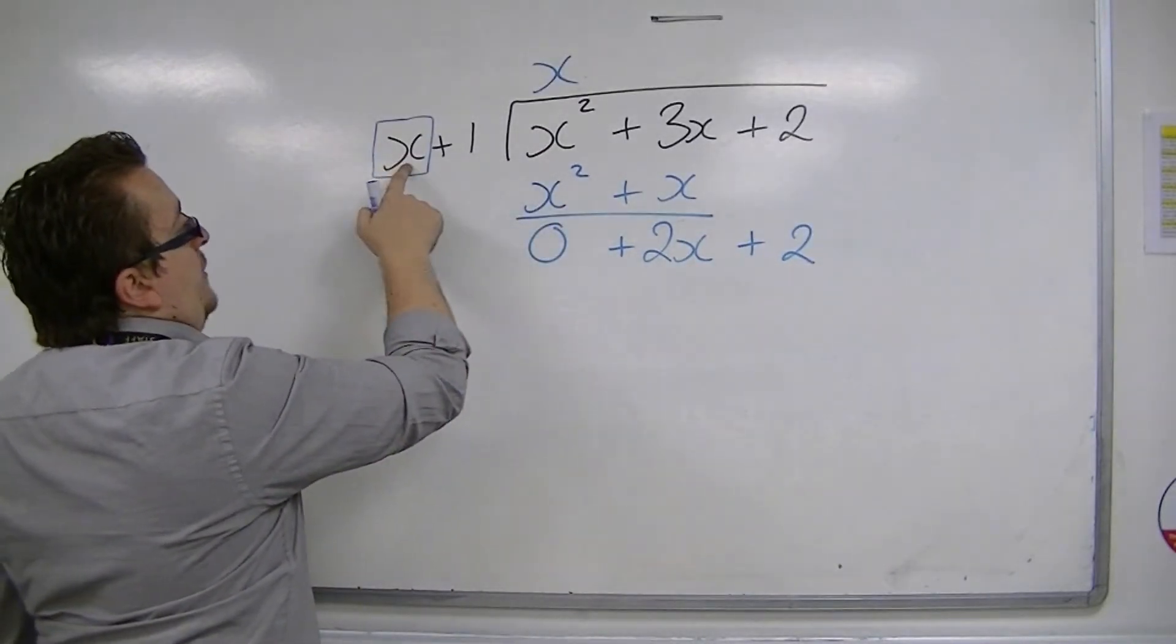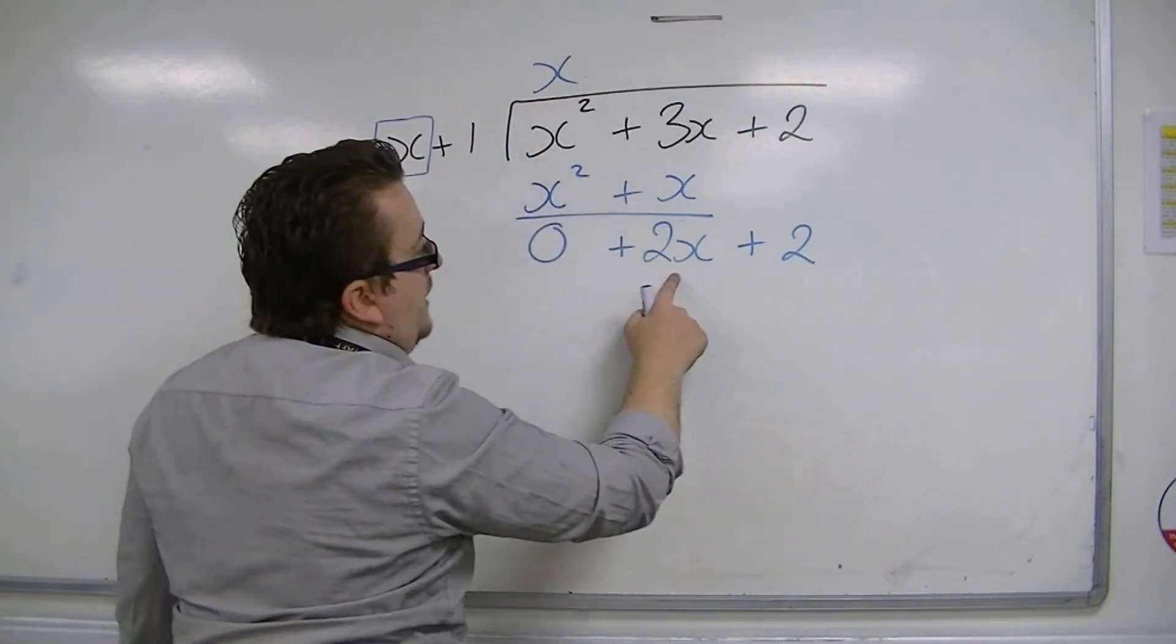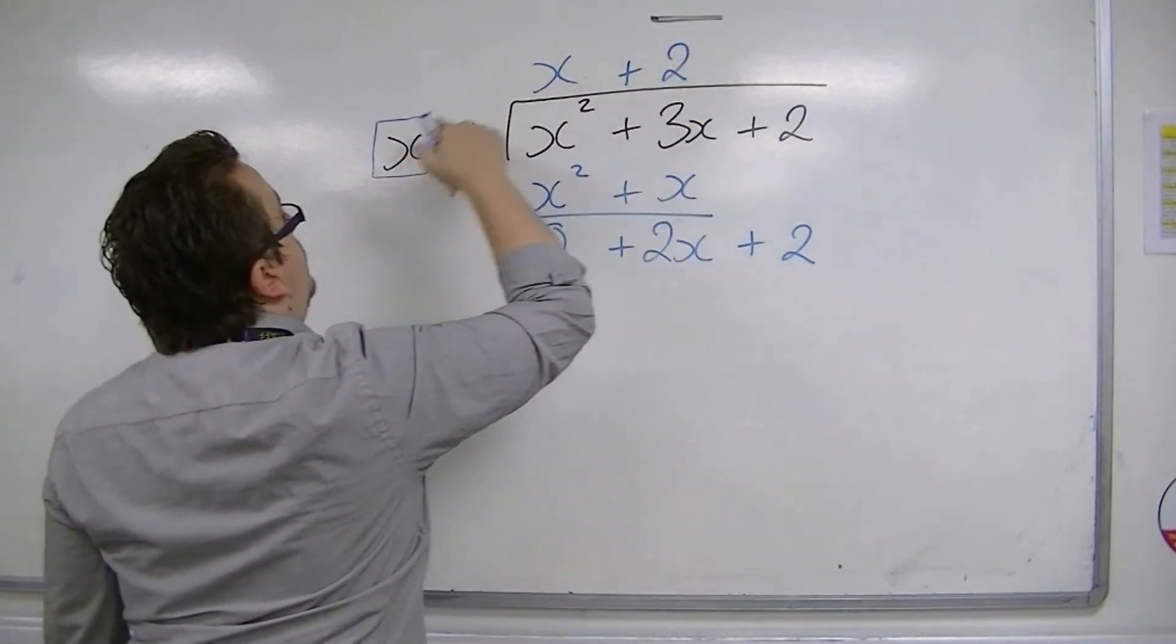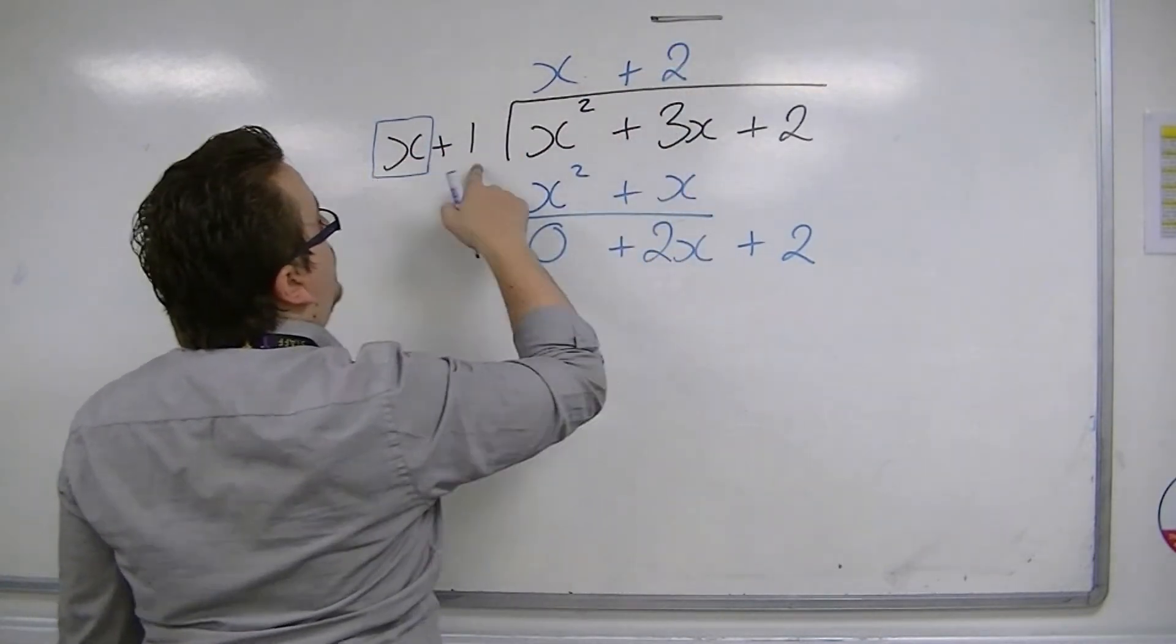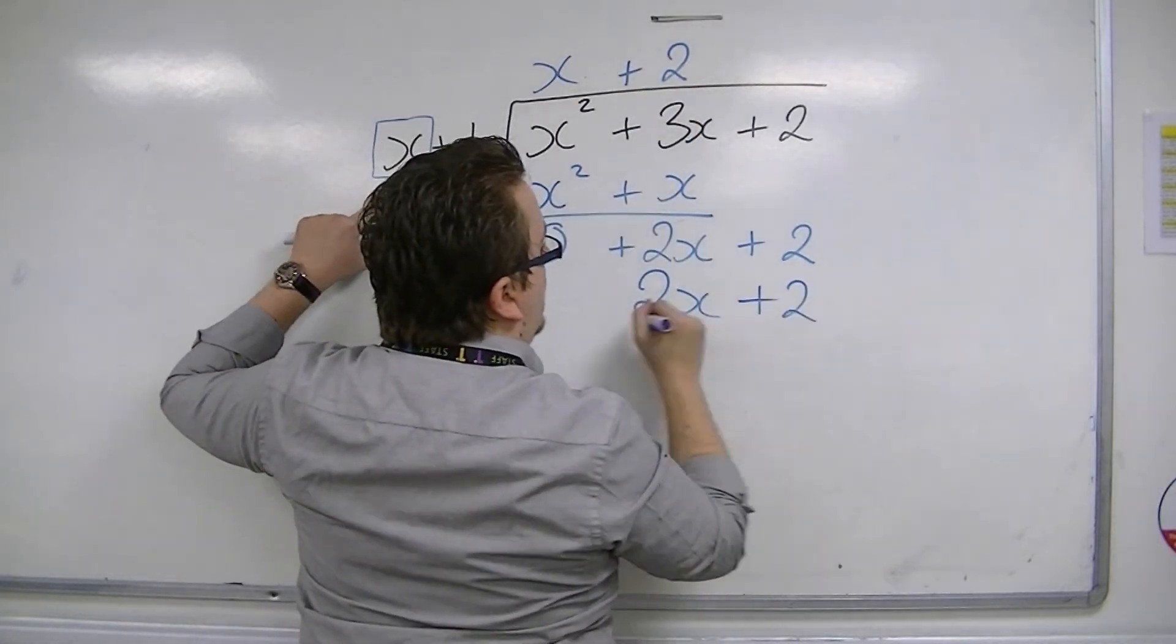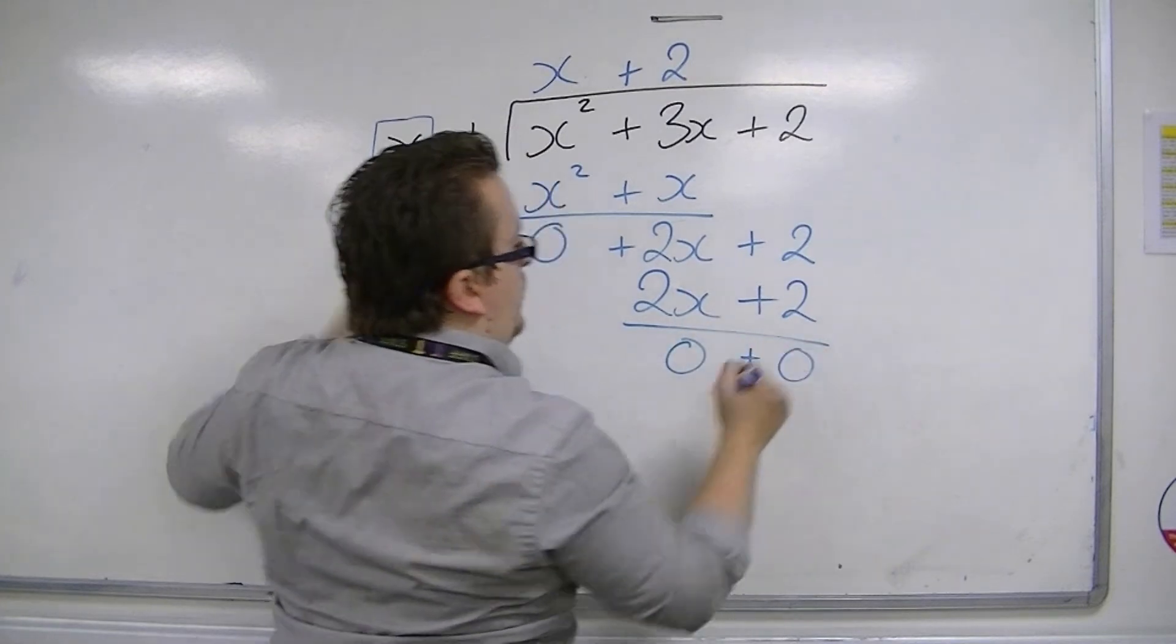Then we're looking at how many x's go into this 2x. So originally we looked at how many x's go into the x squared. We're now into the 2x. So x into 2x goes twice. Then we have 2 times x and 2 times 1. So we multiply the 2 by both of those terms. Draw a line, perform a subtraction, and we get 0.